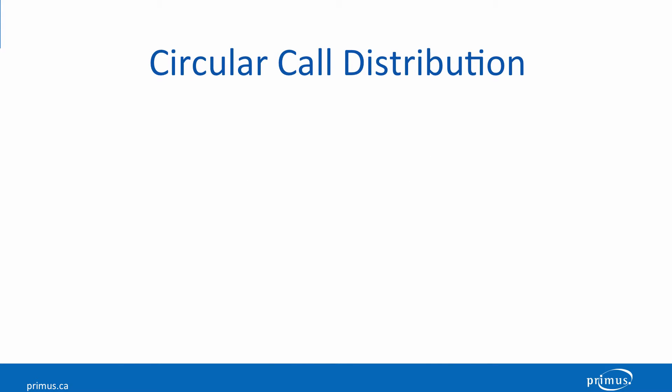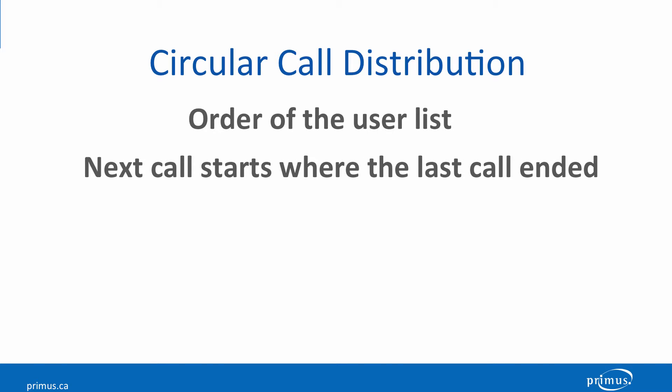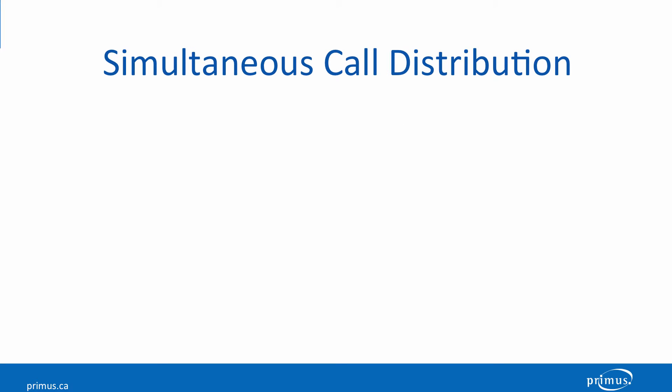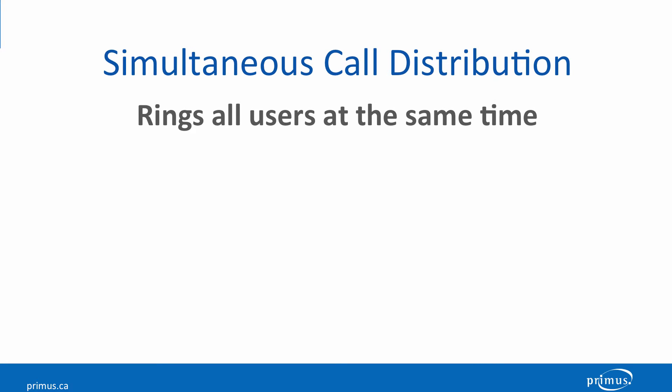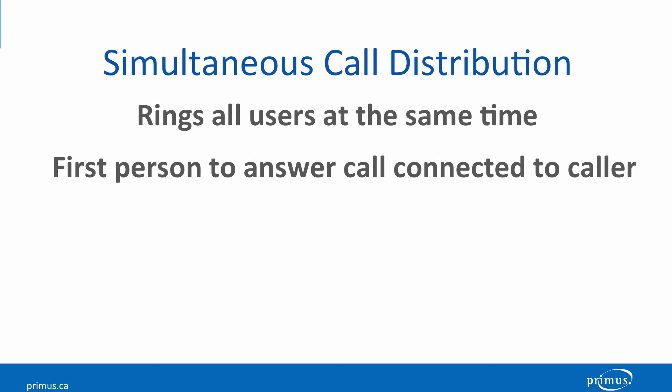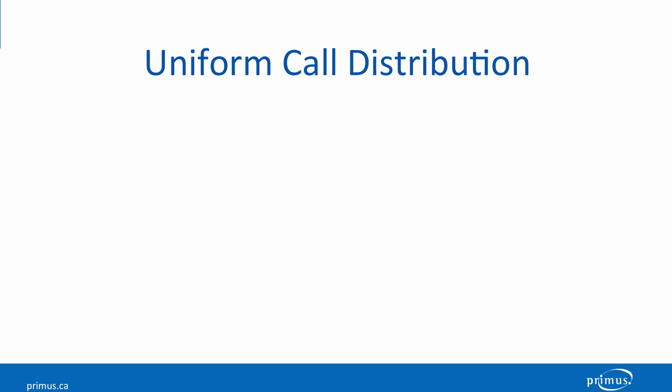Circular sends calls to users' telephones using the order listed for the Hunt Group. Incoming calls go to the first agent on the list, beginning where the last call left off. Simultaneous sends calls to all the users listed in the Hunt Group at the same time; the first user to pick up the call is connected to the caller. Uniform sends calls to the user's telephones that have been idle the longest.